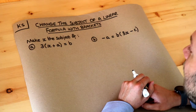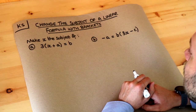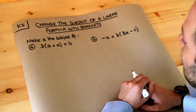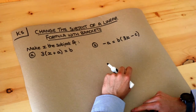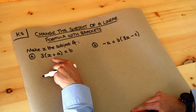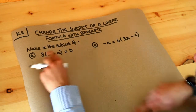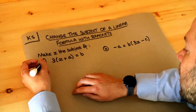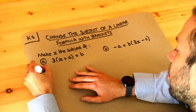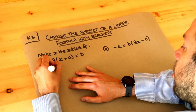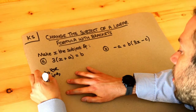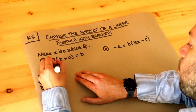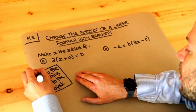Hello and welcome to this Dr. Ross-Math's key skill video on changing the subject of a linear formula with brackets. Previously we said that to make x the subject of a formula means to get x on its own on one side of the equation, so we don't want extra stuff around the x. My one strategy here is to undo the last thing done to the subject — we think of the story of what's happening to x on the side it appears.